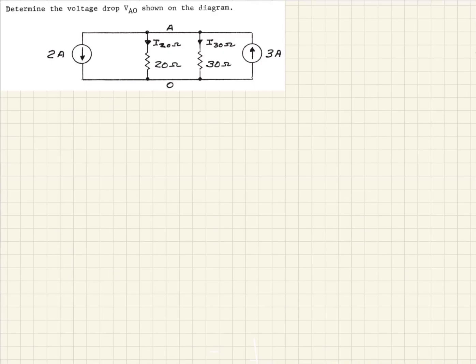In this example, we're given a circuit shown here that has two current sources, and they're asking us to determine what the voltage drop is going to be across the circuit. This would be VAO. Here's A and here's O.